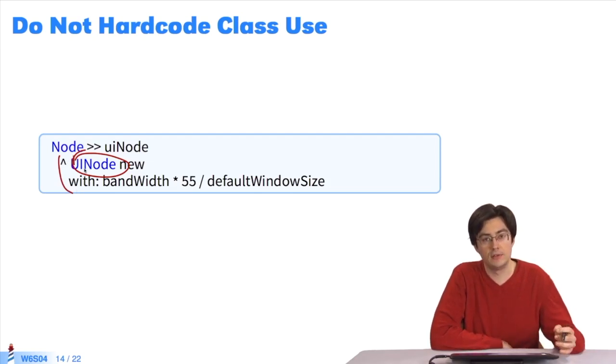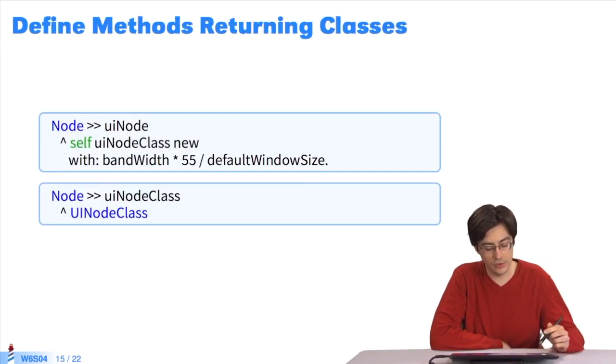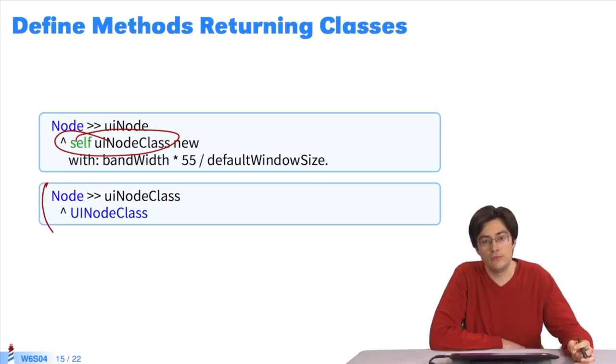Here we can use the same process and extract the class into a method, so that the subclasses can change the instance variable. That's what I'm doing here. I extract the part that interests me into a method, and I send a message. Sending a message enables the subclasses to change behavior.